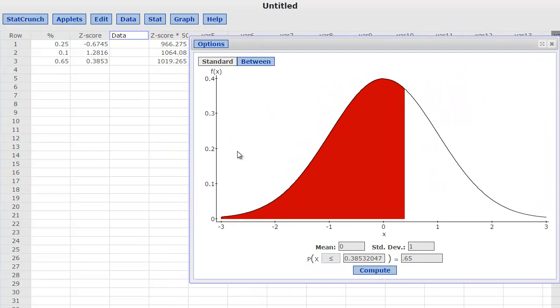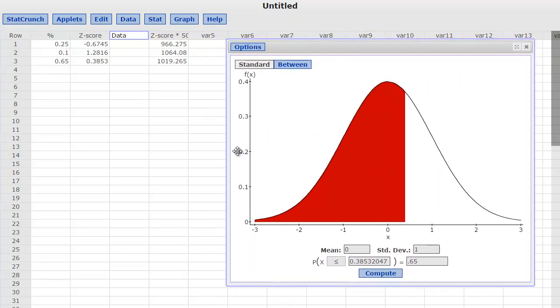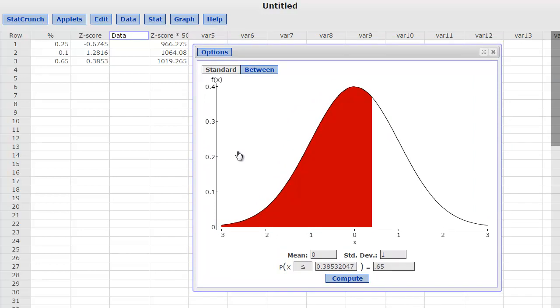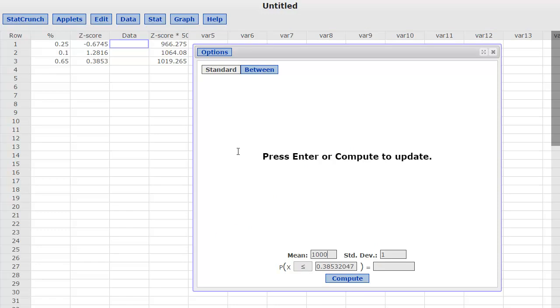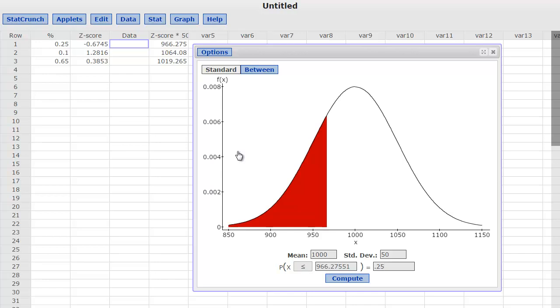Now here's the super cool thing about StatCrunch. You don't actually have to find the z-score. You may need to for your professor, but to actually find the data value, all you need to do is plug the mean 1,000 in, plug the standard deviation 50 in, and then plug in whatever percentage you want. For us, we wanted the lowest 25%. And I hit compute. And it tells me that it's 96.2755. So that's the data value that we got.